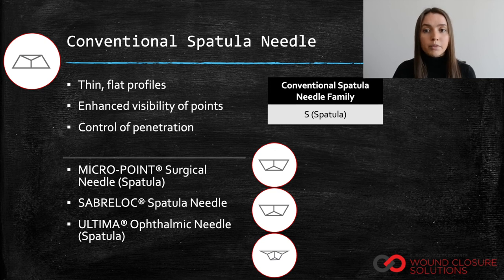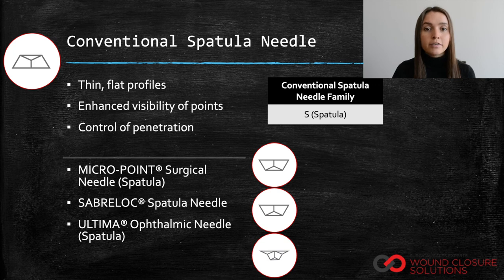Ultima ophthalmic spatula needles have reduced edge angles which allow for better tissue penetration. These needles readily facilitate knot rotation in ophthalmic surgery.